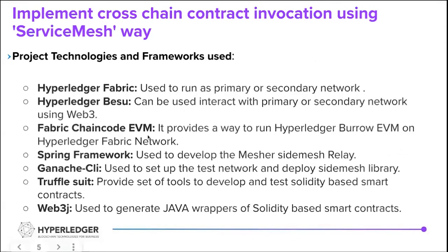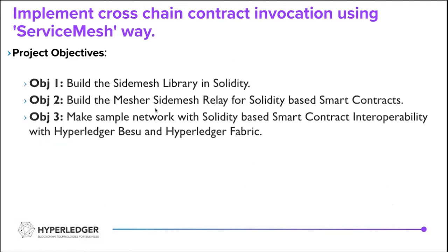In this project, I have used multiple libraries and frameworks — the mesh service is built on the Spring framework. For Solidity-based smart contracts, I have used Ganache for the primary and test networks, the Interledger Suite for developing and testing contracts, Java Web3 wrappers to generate Web3 Java wrappers for Solidity, and Hyperledger Burrow EVM running on top of Hyperledger Fabric to deploy Solidity-based smart contracts.